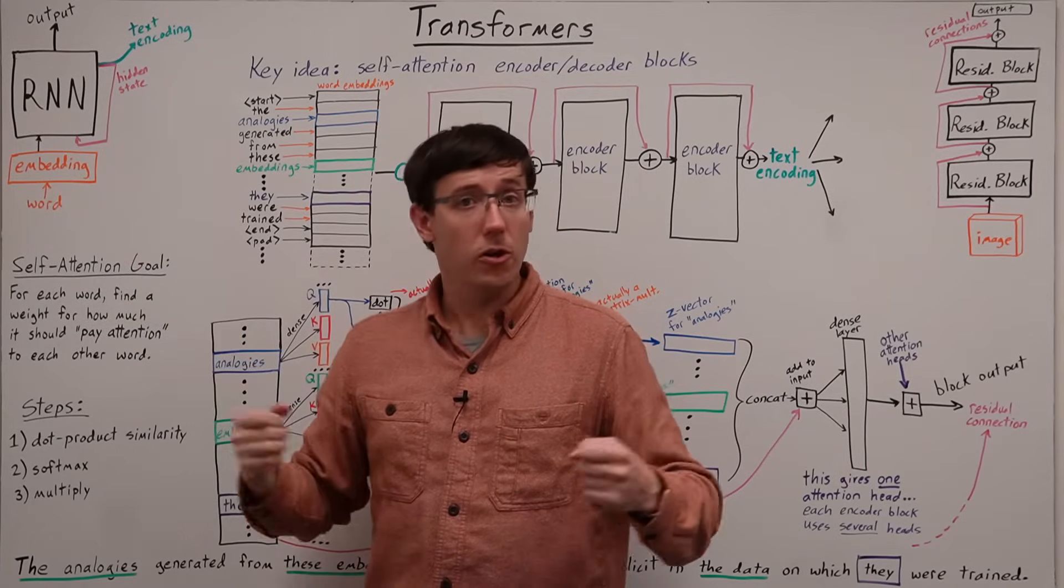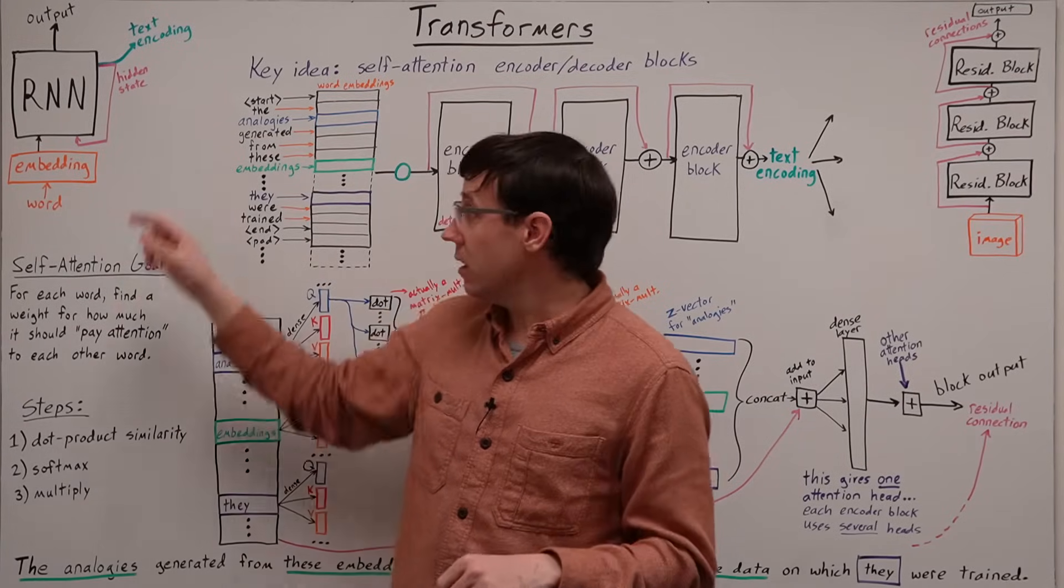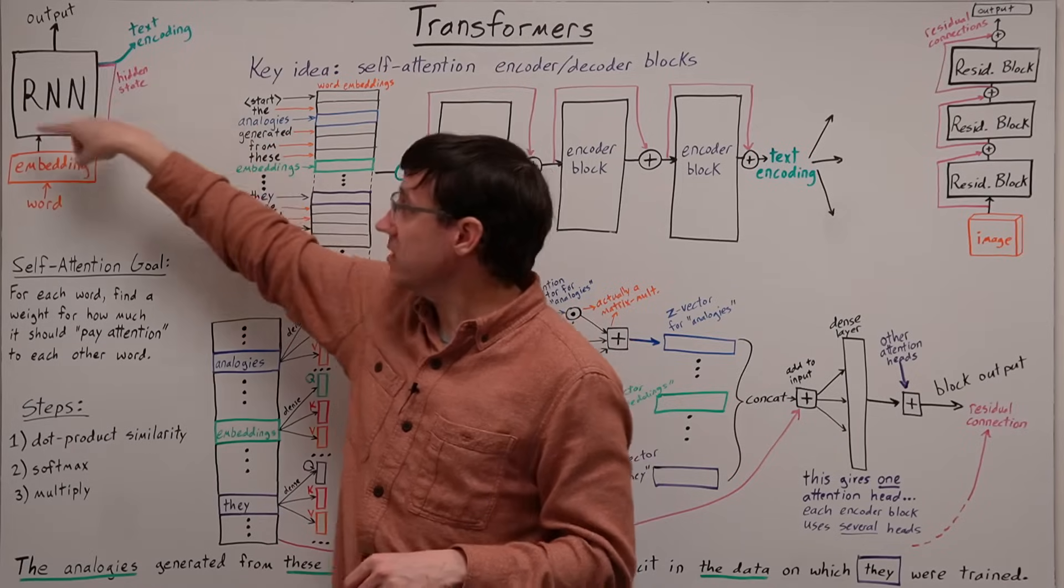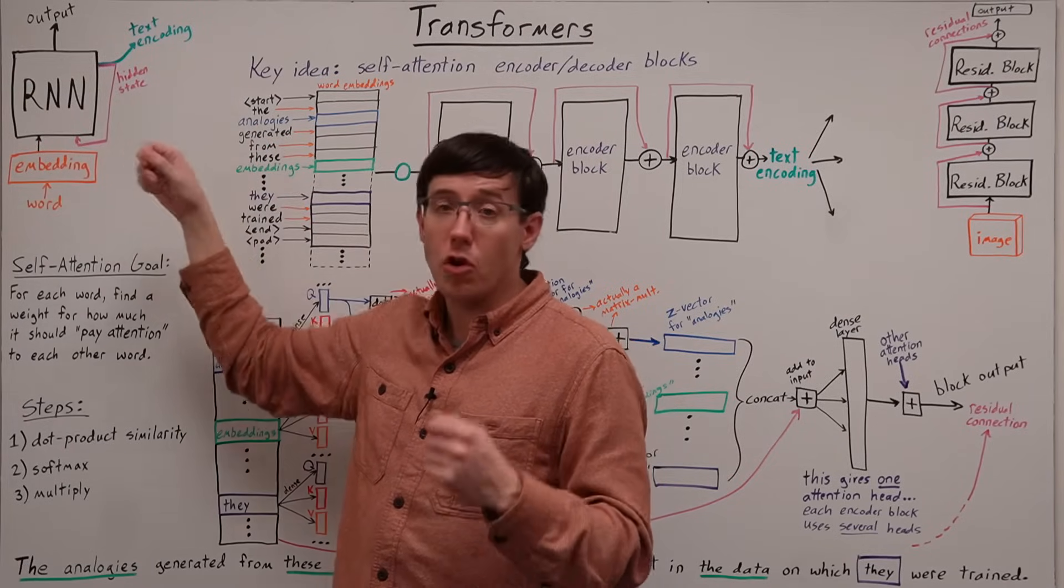But recurrent networks, even LSTMs, tend to struggle with long inputs because the data has to be passed through the layers so many times.